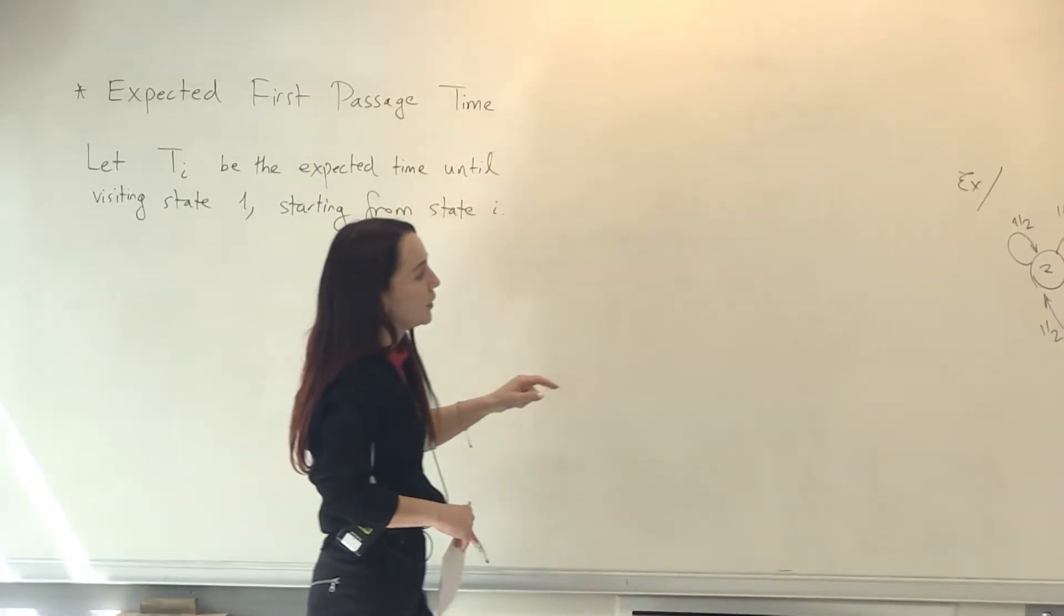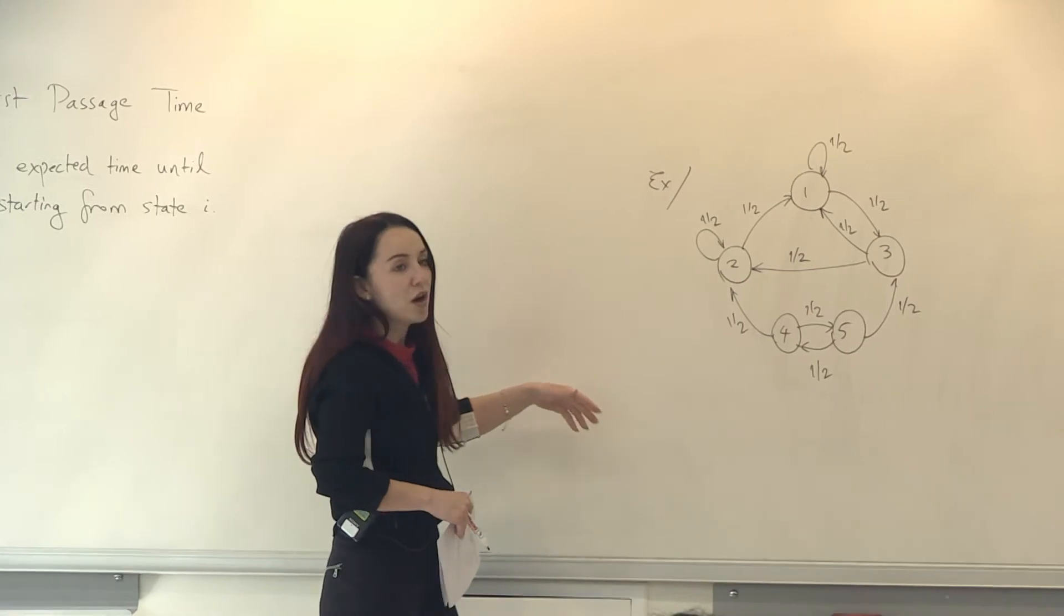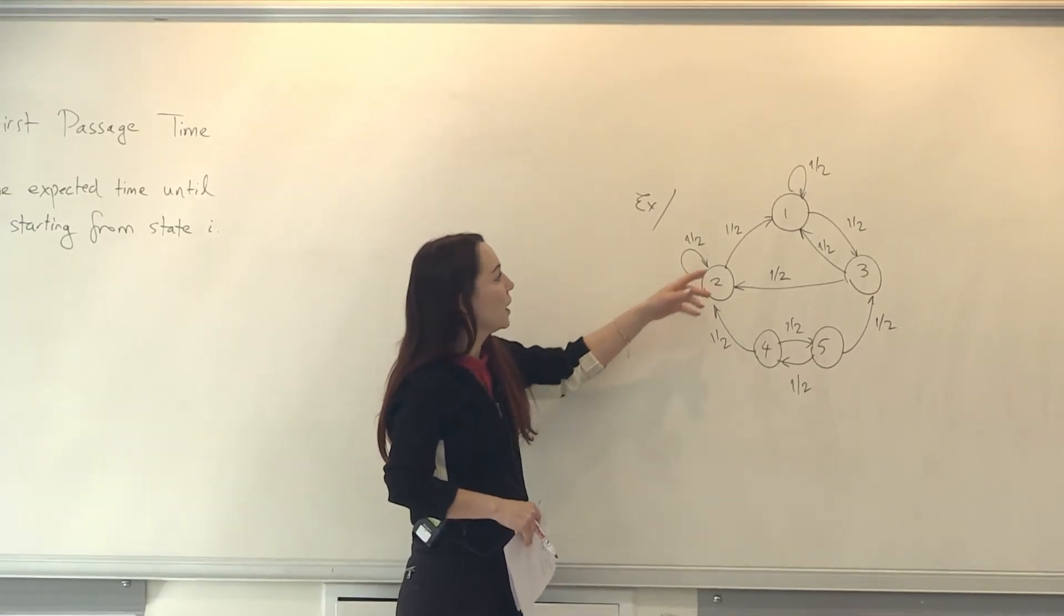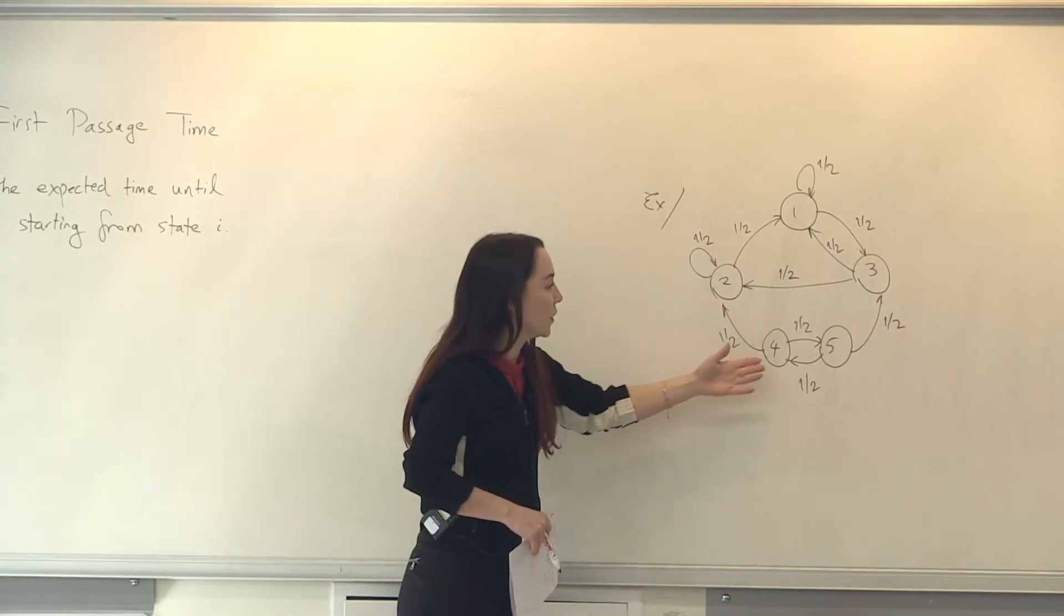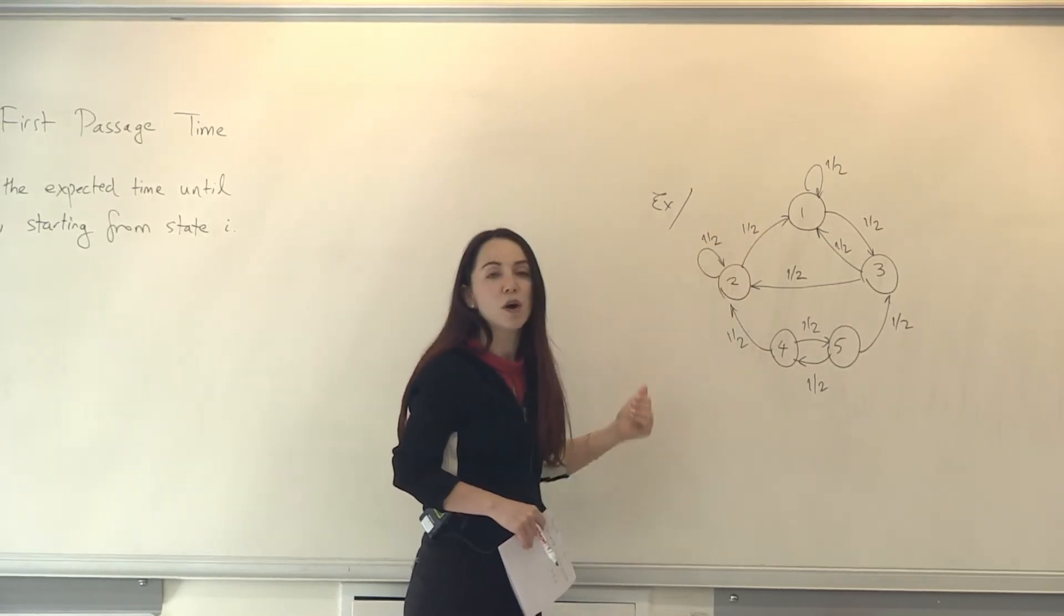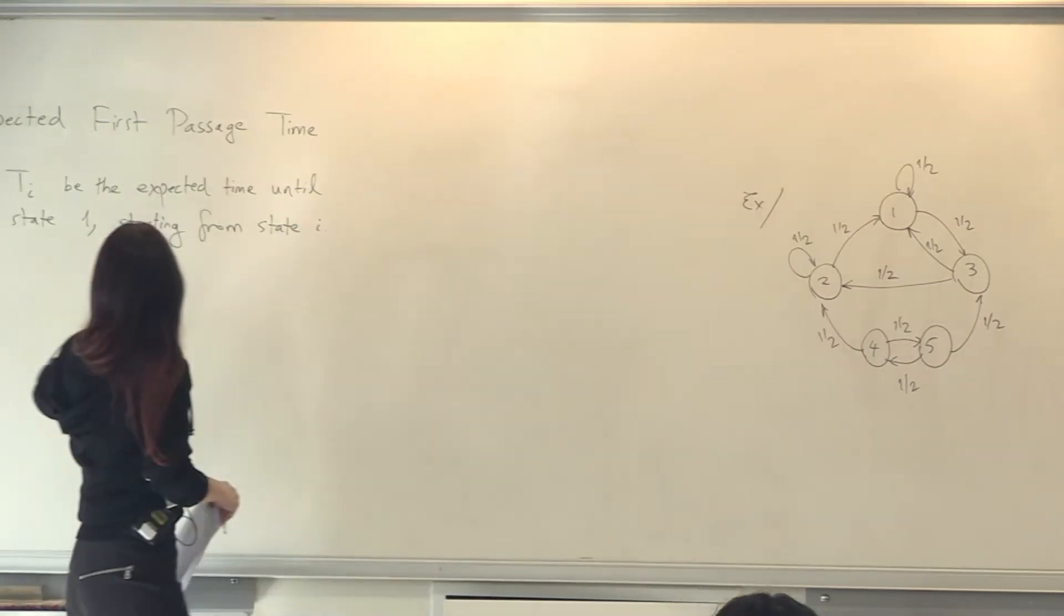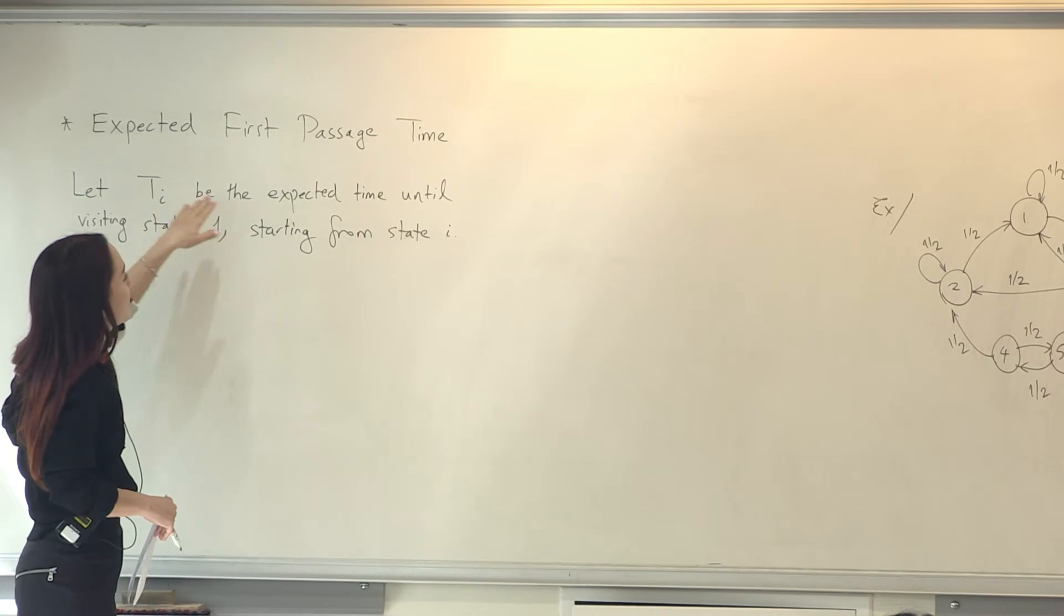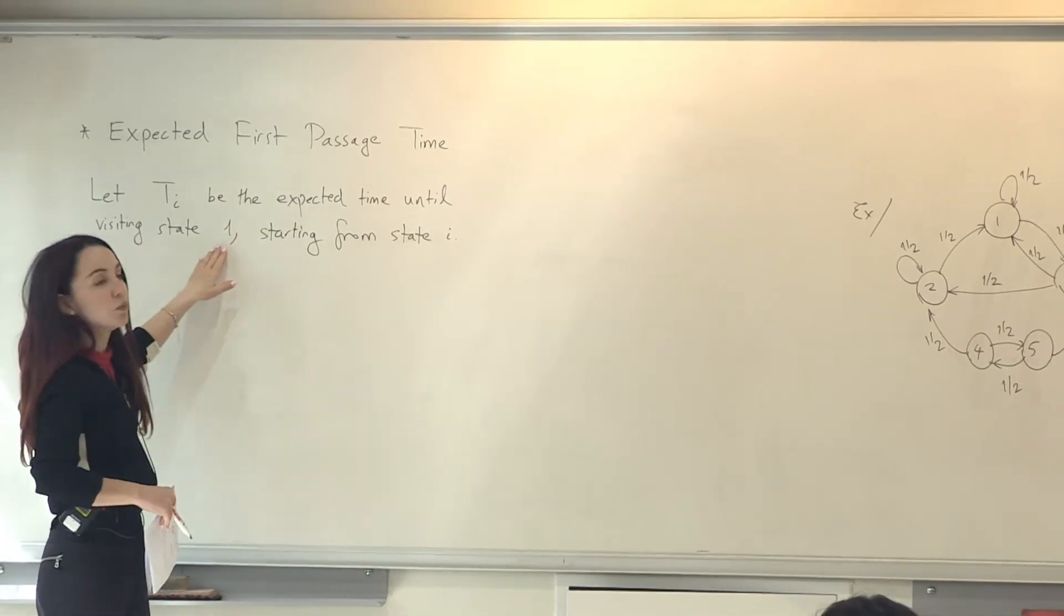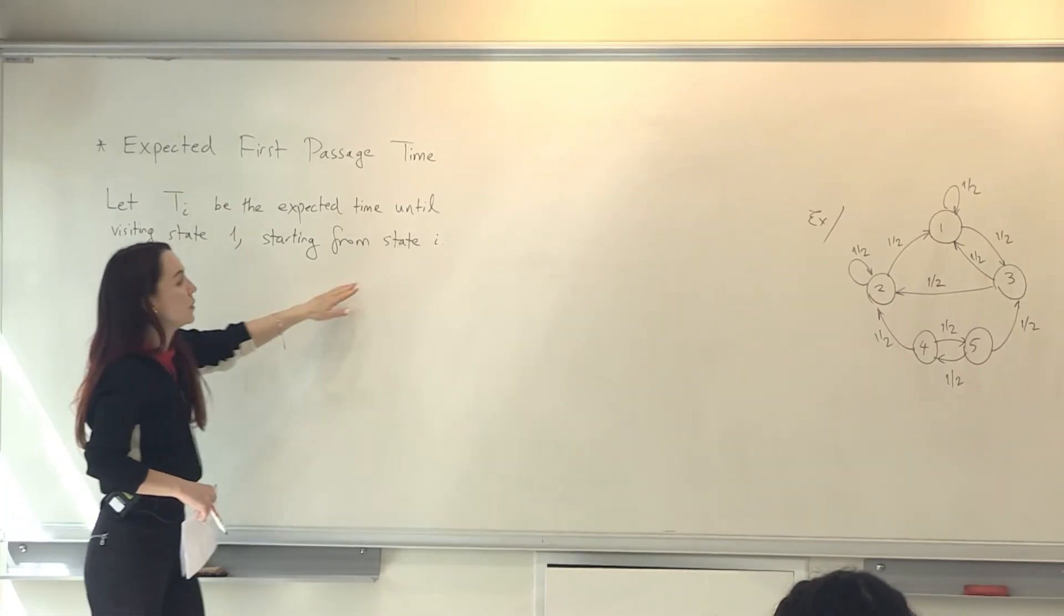Suppose we are wondering about how many transitions it will take until we visit state 1 for the first time, starting from somewhere else or maybe 1 itself. So suppose Ti is defined as the expected time until visiting state 1, starting from state i.